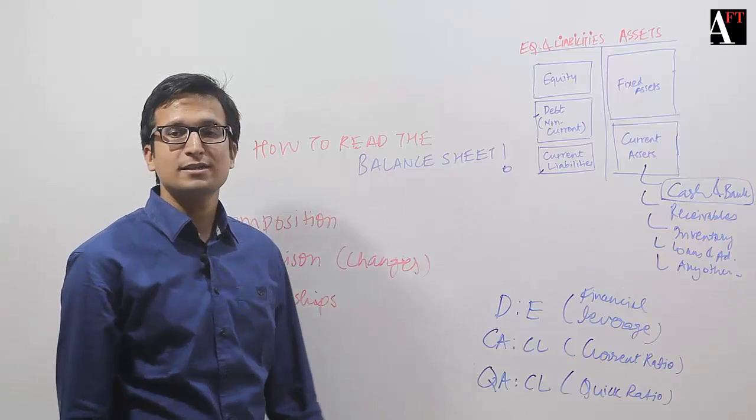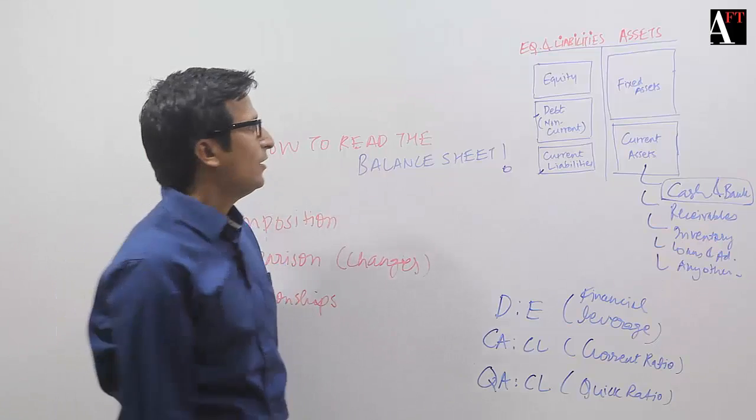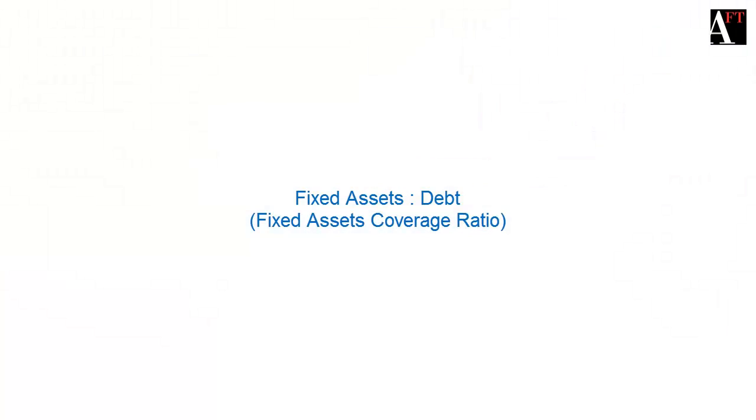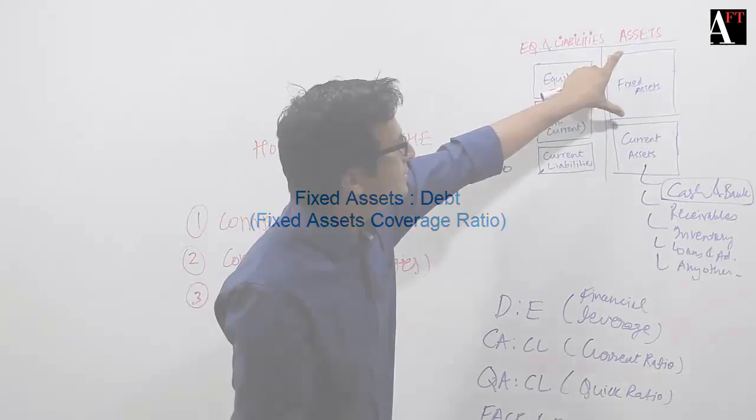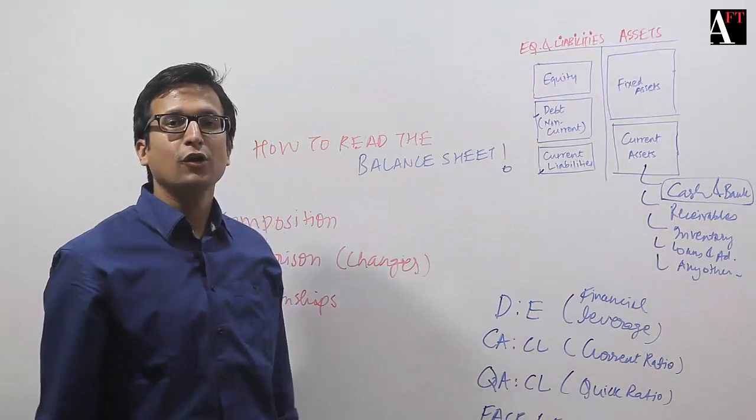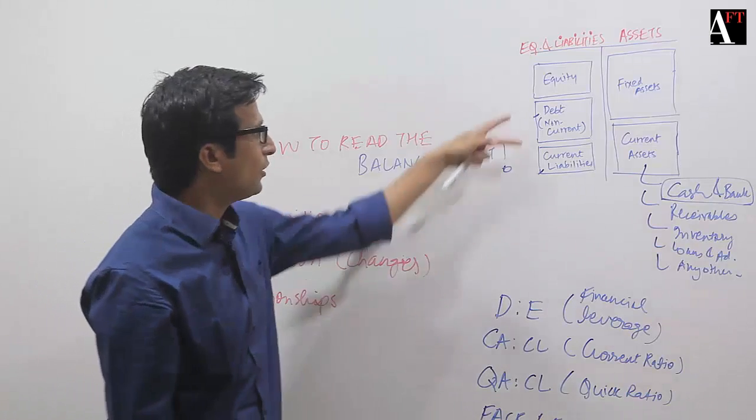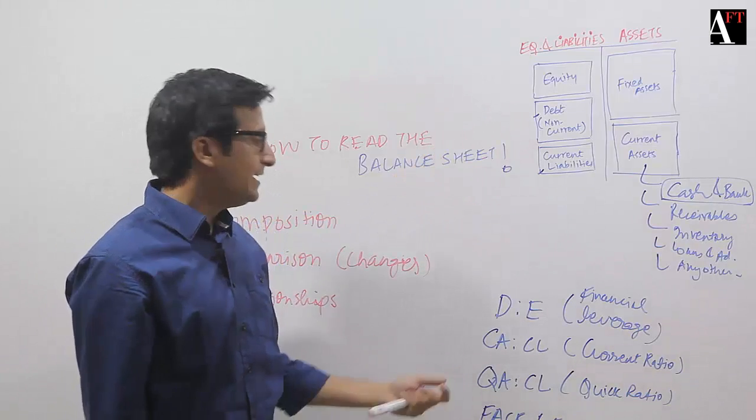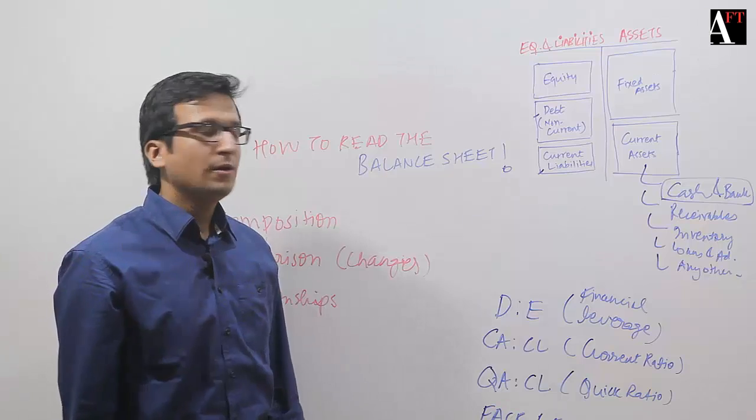Another one is fixed assets to the debt ratio, which effectively tells you the FACR—the fixed asset coverage ratio—which tells you, do you have sufficient cushion in the form of fixed assets to cover your long-term liabilities or the debt?